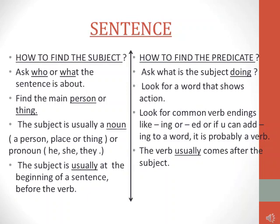To find the predicate, ask what the subject is doing. What is Ram doing? Ram is playing. So 'is playing' becomes the predicate — that is the doing part. The second way to find the subject is to find the main person. The main person here is Ram. And for the predicate, we look for the word that shows action. Which word is showing action here? Playing. So 'is playing' is the predicate.